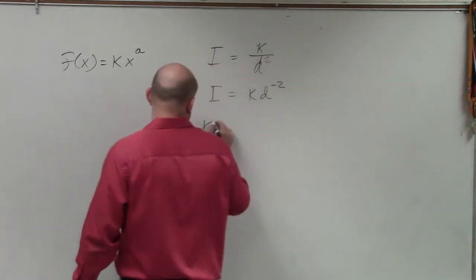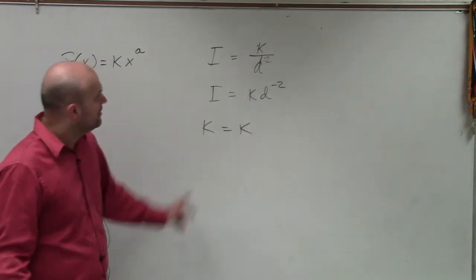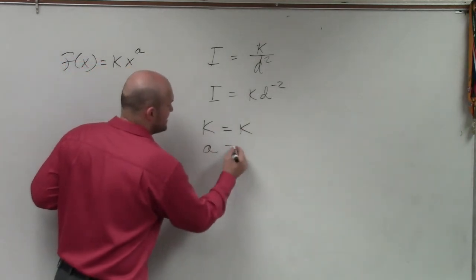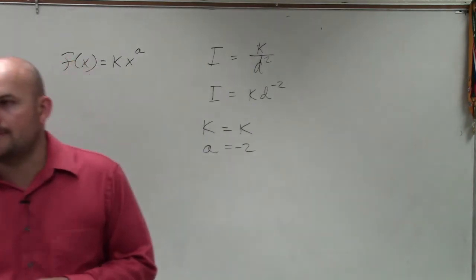So I can say my constant k, in this case, is actually k, just the variable. My power, though, a, is negative 2. So it is a power function, OK?